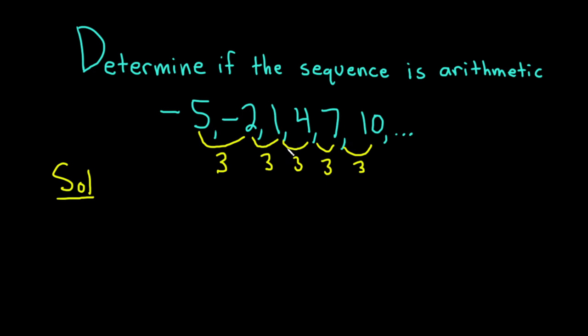So in this case, we do have an arithmetic sequence. So the answer is yes, it is arithmetic. And we know that because we have that common difference. We have that number that we're adding over and over again. So in this case, d is equal to 3.